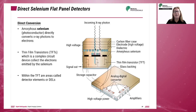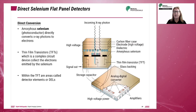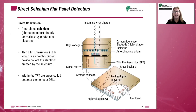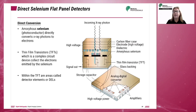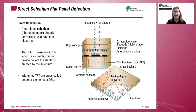Termed direct because there is no need for light conversion, these systems directly convert the X-ray photons exiting the patient into an electronic signal. They use a photoconductor and a TFT array. A TFT is a complex circuit that collects electrons. TFTs have an electronic switch on a flat panel detector that allows the charge collected at each pixel to be independently transferred to external electronics where they are amplified and digitized.